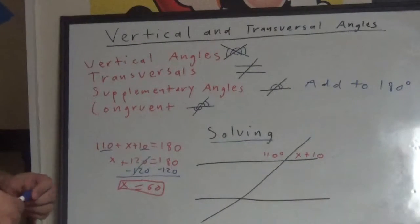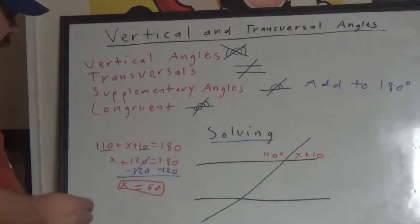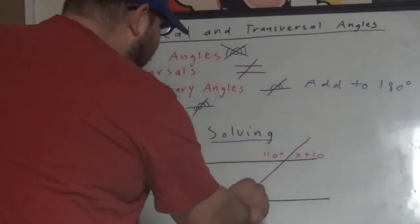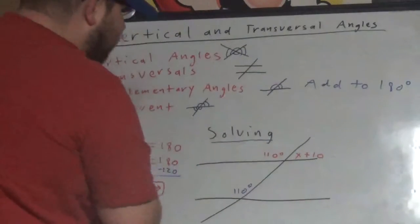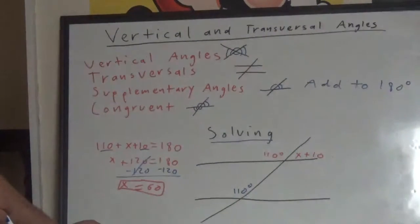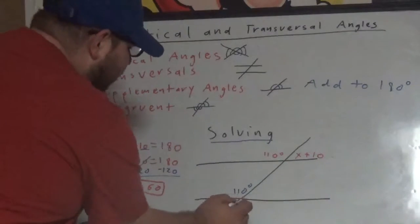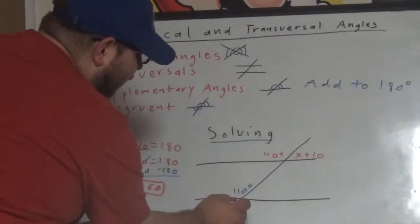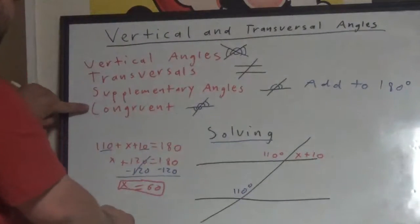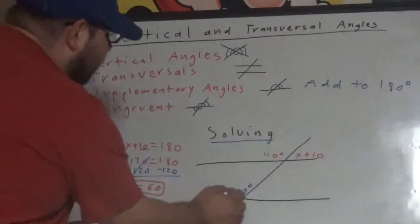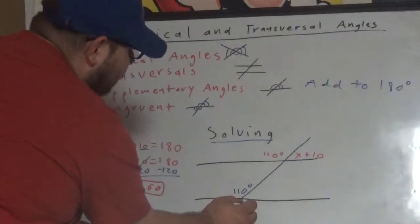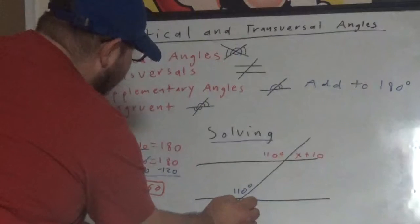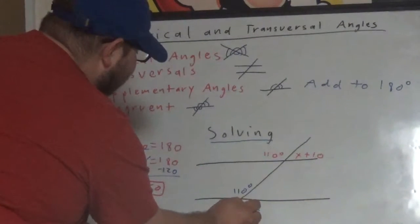This time, I'll put it in blue. Let's assume that we have, again, 110 degrees. And then now let's do a vertical angle. Remember, vertical angles are congruent. I'm going to call that, let's say, x plus 50.